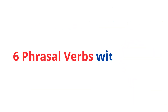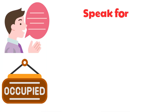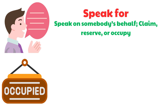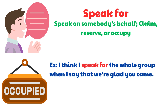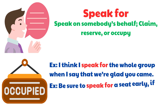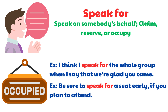Six phrasal verbs with 'speak.' First: Speak for. Meaning: to speak on somebody's behalf, to claim, reserve, or occupy. Examples: 'I think I speak for the whole group when I say that we're glad you came.' 'Be sure to speak for a seat early if you plan to attend.'